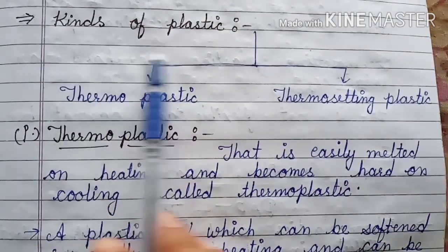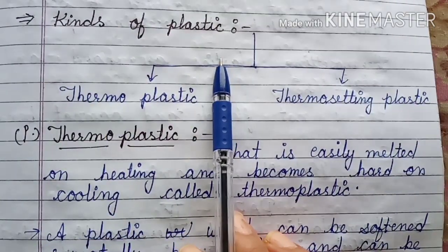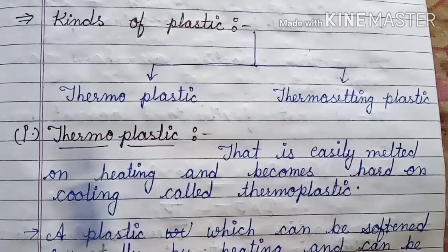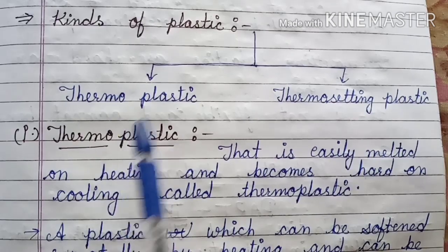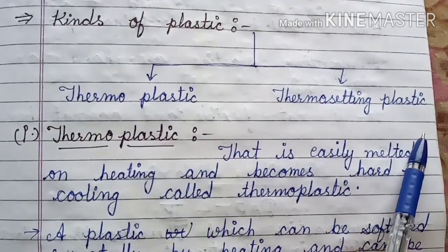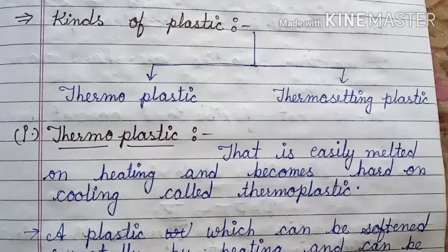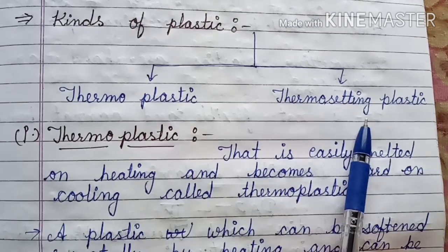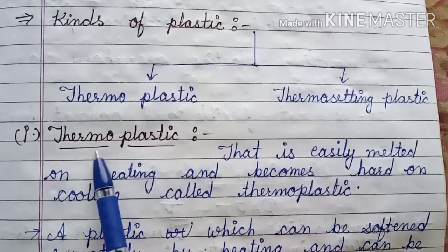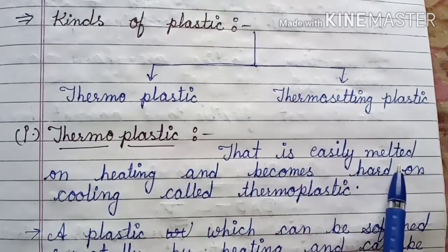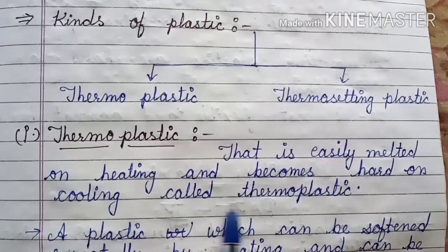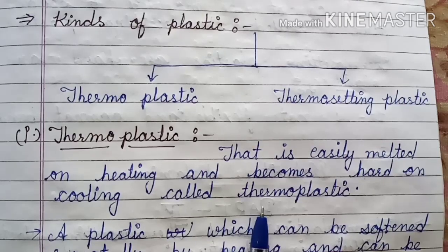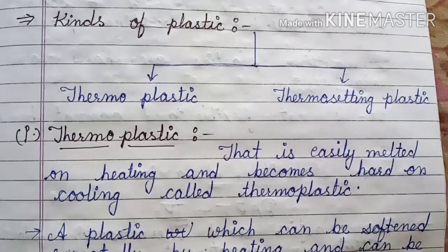Next topic is kinds of plastic. There are two kinds of plastic: thermoplastic and thermosetting plastic. Thermoplastic is a plastic that easily melts on heating and becomes hard on cooling. It is called thermoplastic.